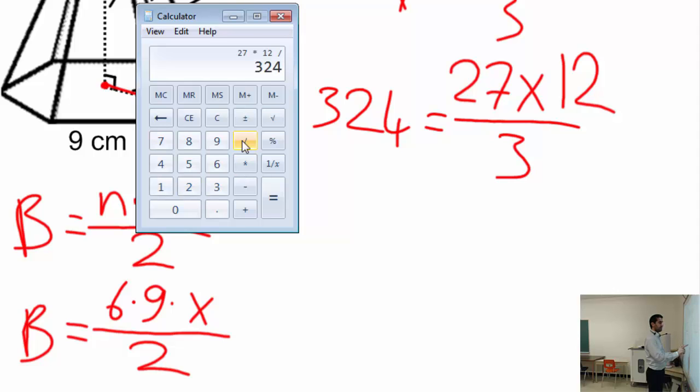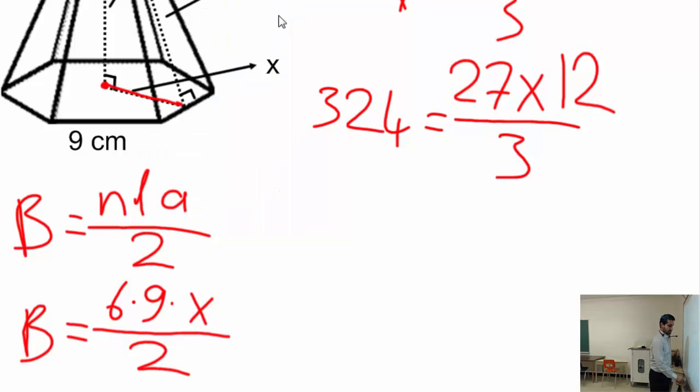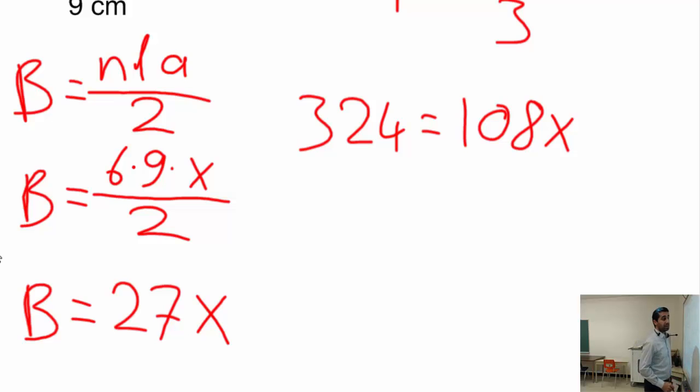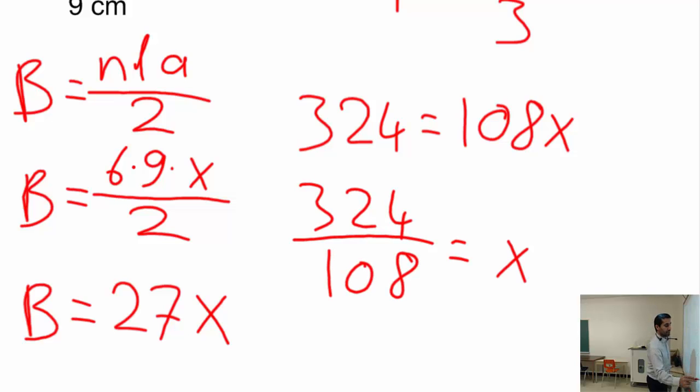Let's go ahead and write that down. Let's repeat this: over here I'm going to write down 108. Let's not forget x is still there. So what we do here is leave x alone. 108 is going to go to the other side as a division. Let's do that: 324 divided by 108 equals x.